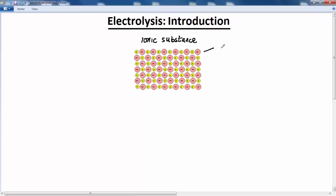So here we have an ionic substance. This might, for example, be a salt or a metal oxide. And you'll see that it consists of ions, positive and negative ions, held together in what we call an ionic lattice. So we've got the positive ions are called cations and the negative ions are called anions.